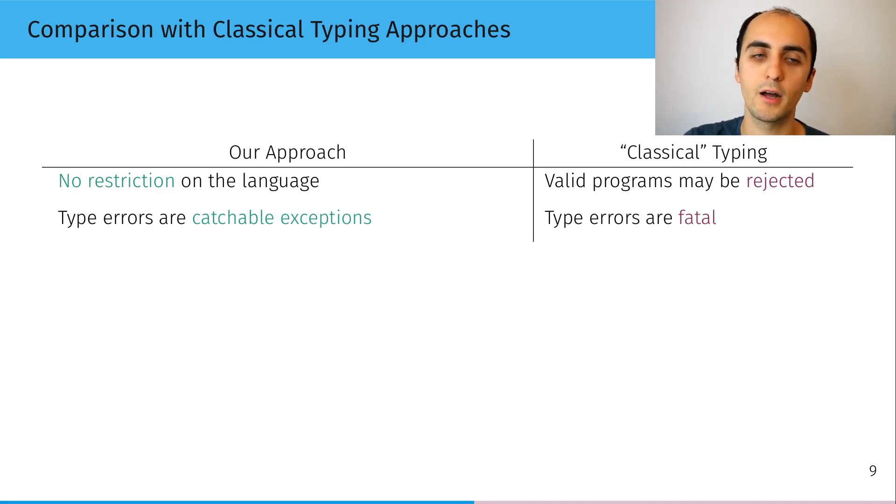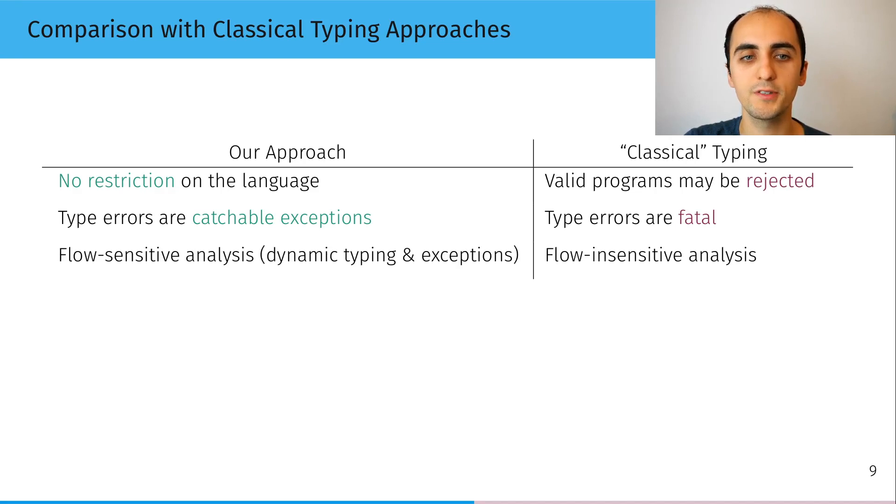Here, type errors are catchable exceptions, which mean you can recover from them at any point. We're forced to do a flow-sensitive analysis to be precise due to the dynamic features, for example dynamic typing, the introspection operators, and the exceptions.